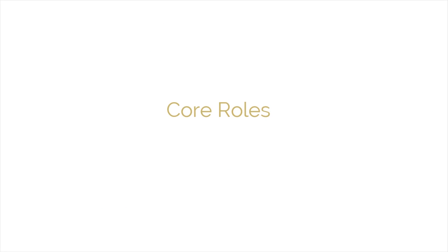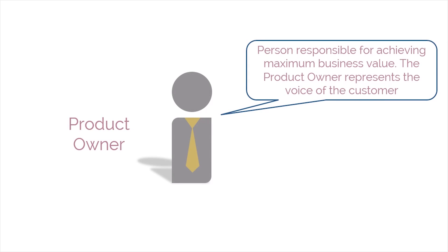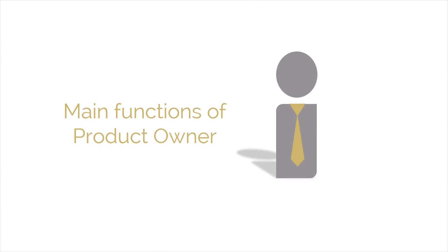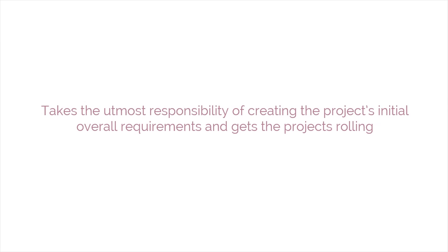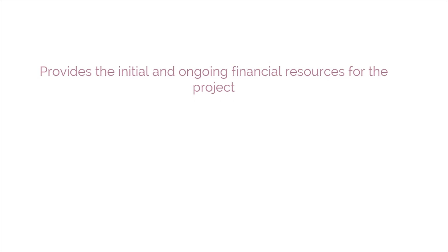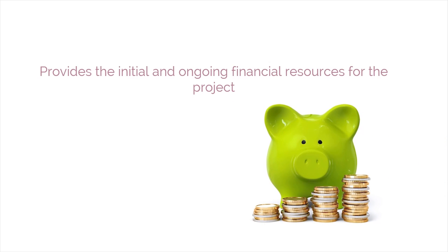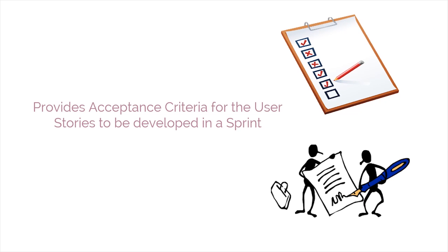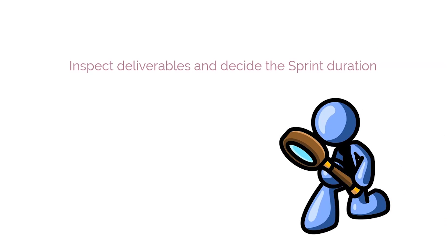Now let's run through the core roles in Scrum. We'll start with the product owner. This person is responsible for achieving maximum business value and represents the voice of the customer. The product owner takes responsibility for creating the project's initial overall requirements, appointing appropriate people to the Scrum Master and Scrum team roles, and providing initial and ongoing financial resources for the project. He or she determines the product vision, assesses viability and ensures delivery of the product or service, decides minimum marketable release content, provides acceptance criteria for user stories to be developed in a sprint, inspects deliverables, and decides the sprint duration.